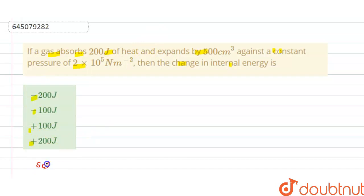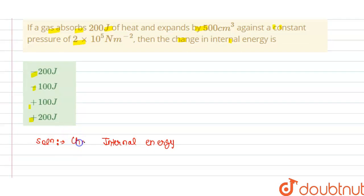So we have to choose the correct option. The solution of this question is we know that change in internal energy, delta U, is equals to Q minus W.